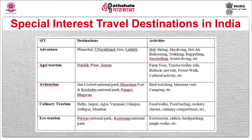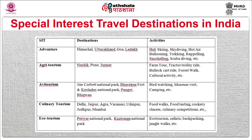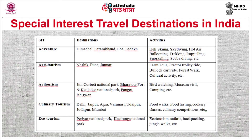For agritourism in India, destinations like Nasik and Pune are famous, offering activities such as farm tours, tractor trolley rides, bullock cart rides, forest walks, and cultural activities.